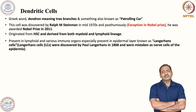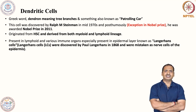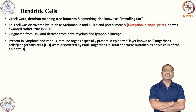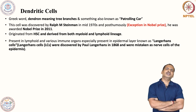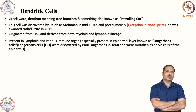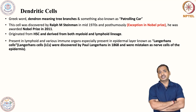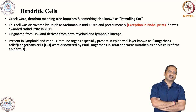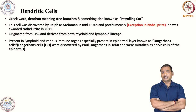The dendritic cells present in the skin are known as Langerhans cells. This was discovered quite early — before the 1970s — by Paul Langerhans in 1868. It was not very well characterized at the time, and he was also confused that these were neuronal cells. They were discovered in the epidermis.